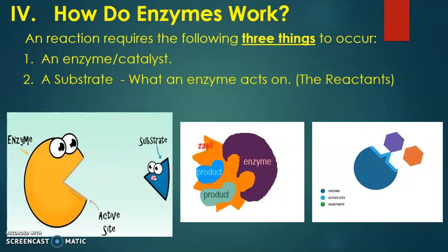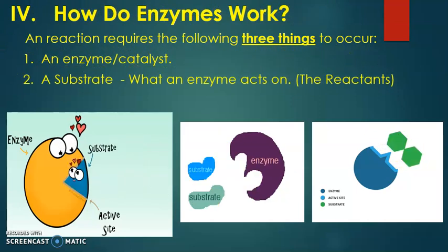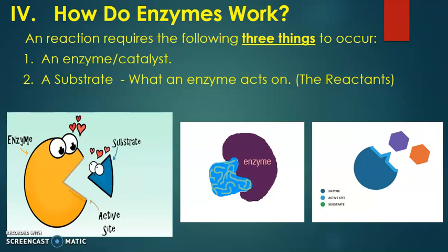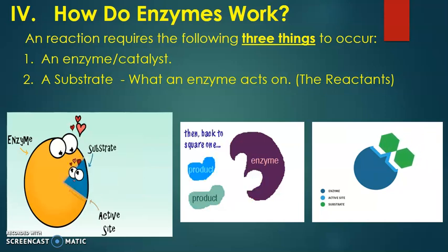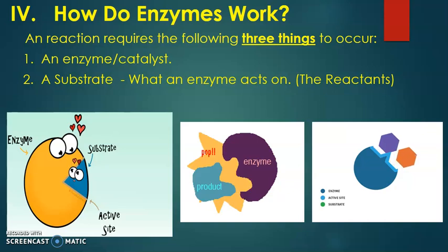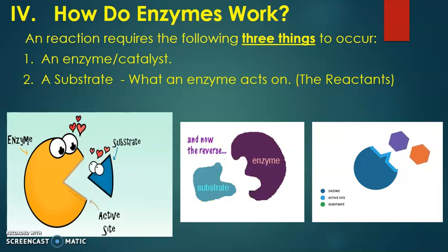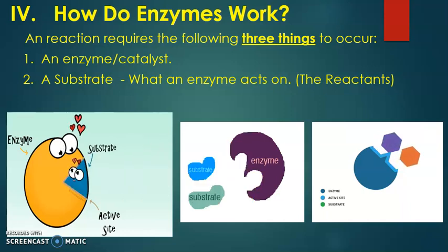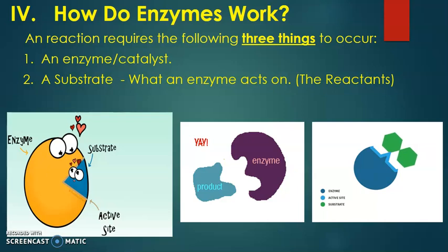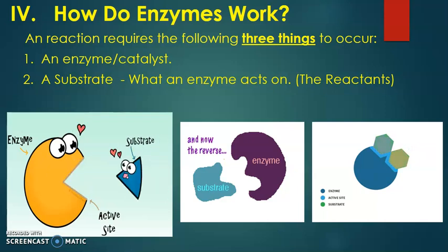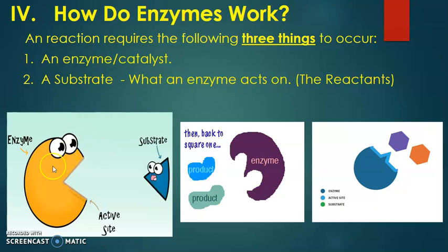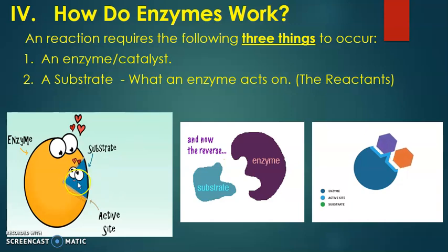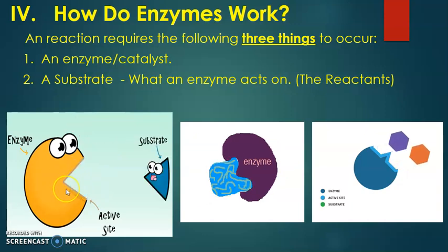First, you're going to need an enzyme itself — what we call a catalyst, something that speeds up a reaction. Second, you're going to need something that we refer to as a substrate, which is anything that an enzyme can act on — the reactants. So if A goes to B, A would be the reactant and B would be the product, making A the substrate. Here you have this Pac-Man, which would be the enzyme, and this blue Dorito chip that fits perfectly into that opening on the enzyme would be the substrate.